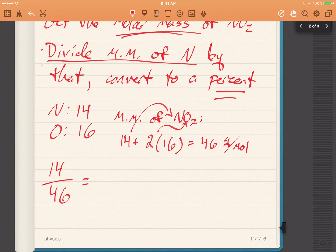14 over 46. Get out your calculator. 14 divided by 46 is 0.304. We'll give another one. 0.3043. But since it's a percent, we always want to times by 100, 30.43%, and we're done.